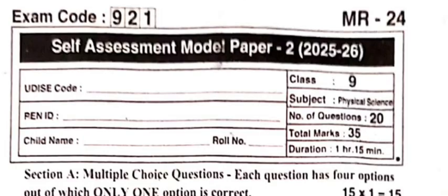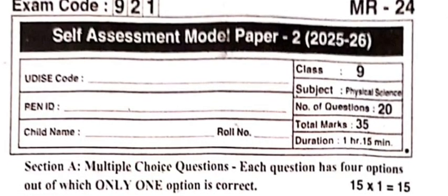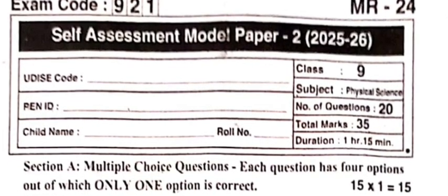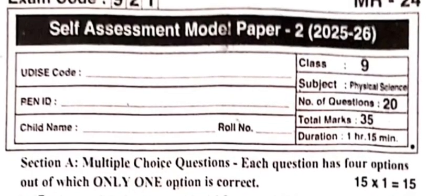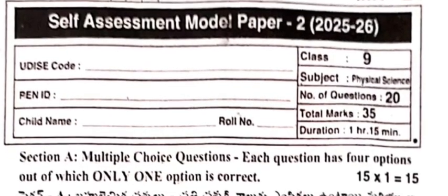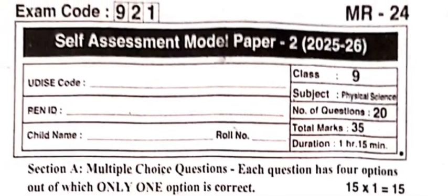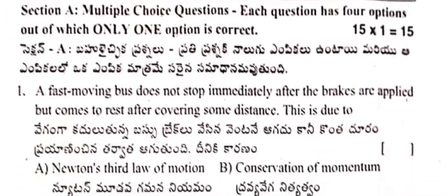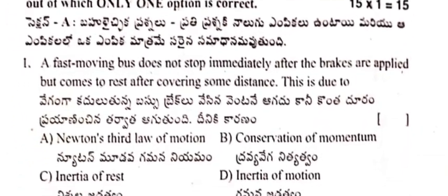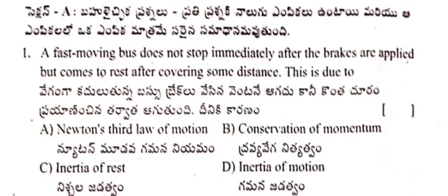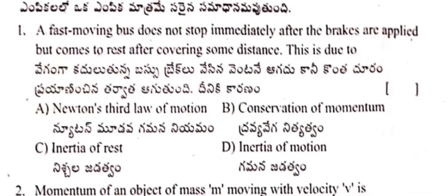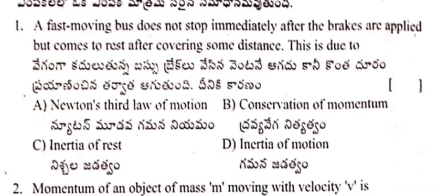Hello, welcome to my YouTube channel. Today's video is about the original question paper of FA2 of Physical Sciences for class 9th. The exam was over yesterday and the question paper code is 921. There are 15 questions given for one mark.